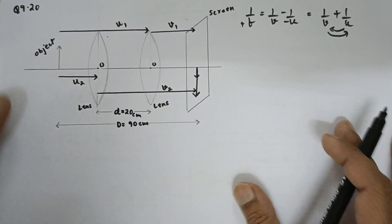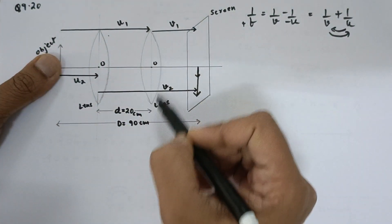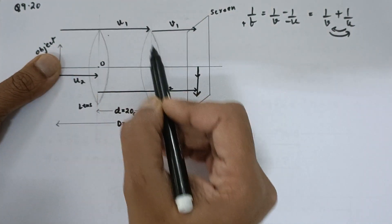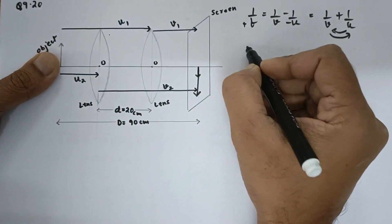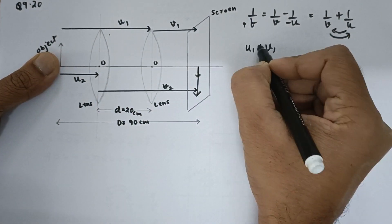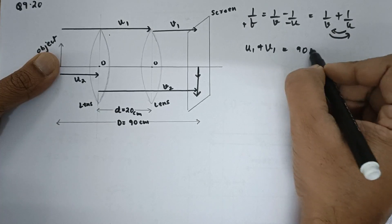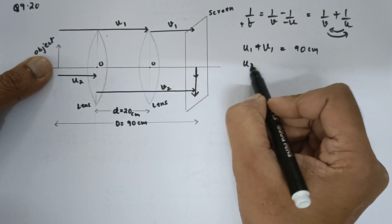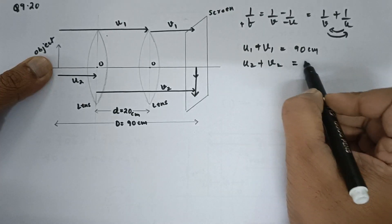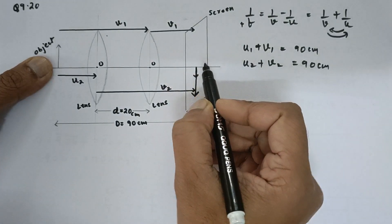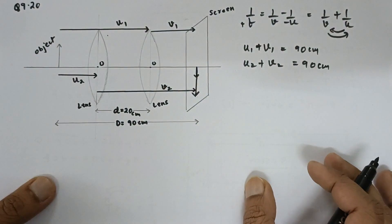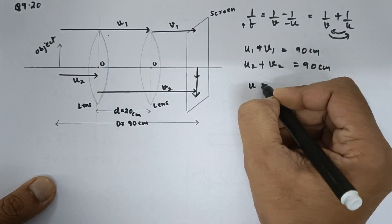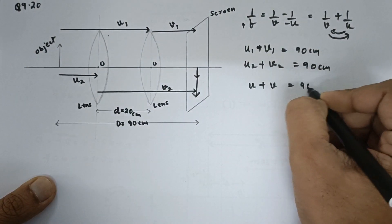So, now let us consider the lens to be over here. Then u1 plus v1 is equal to 90 centimeter. In the same way, when the lens is over here u2 plus v2 is equal to again 90 centimeter because the distance between the object and the lens doesn't change. So, generally writing u plus v is equal to 90 centimeter.